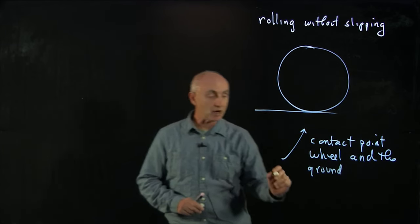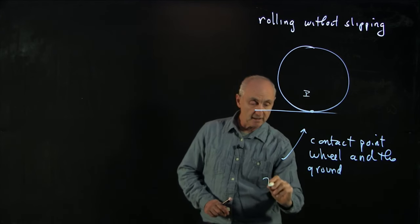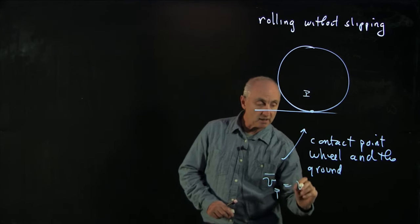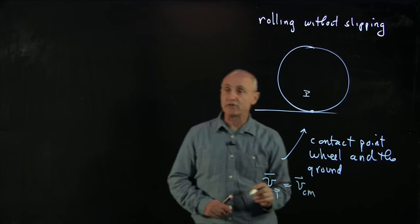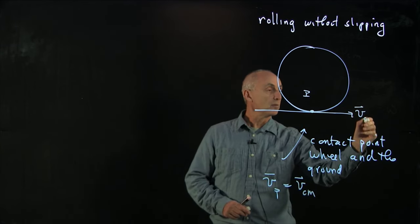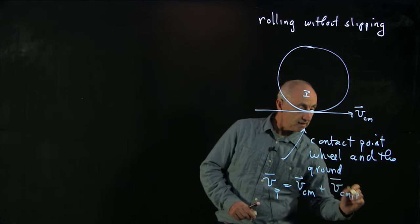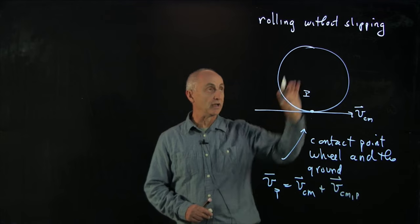Now, we know by our law of addition of velocities, let's call that the point P, that the velocity of P is the velocity of the center of mass, and that pointed this way, plus the velocity of the point P as seen in the center of mass frame.